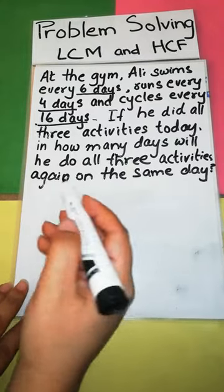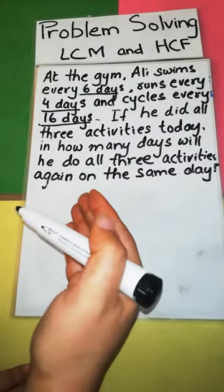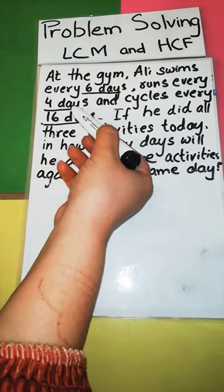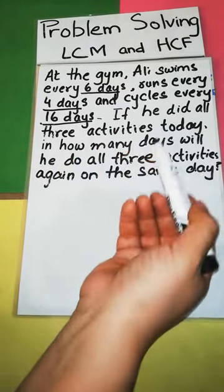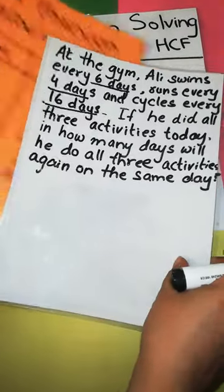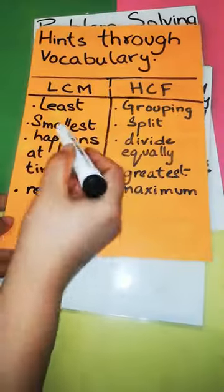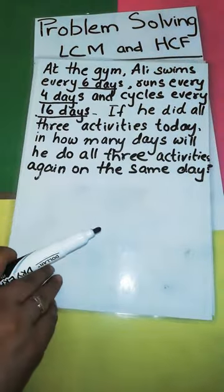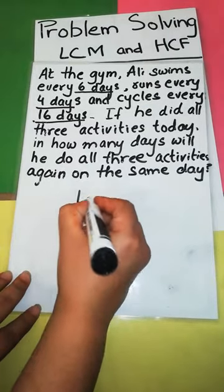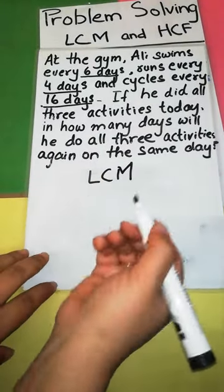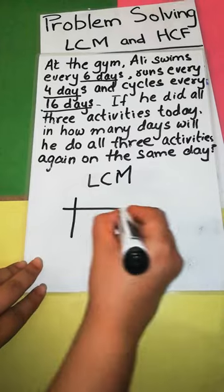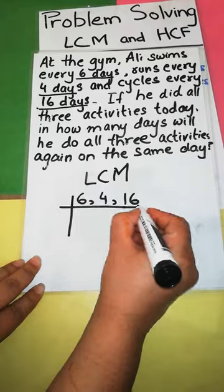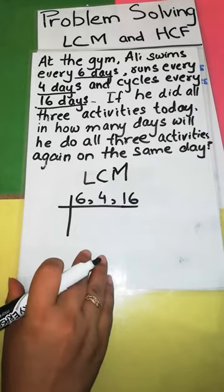After reading this, I feel that there is a repetition of events. After every 6 days he is swimming, after every 4 days running, after every 16 days he is cycling. So in case of repetition of events, I feel that this word problem is an LCM word problem. So once I have identified that this is an LCM word problem, I can do it very easily through the division method or the prime factorization method as I have explained you in my earlier videos.